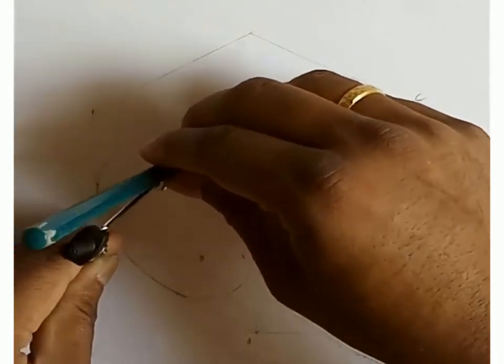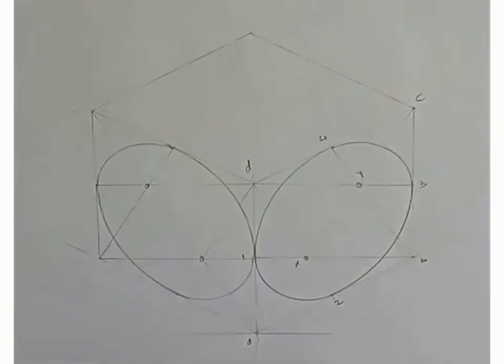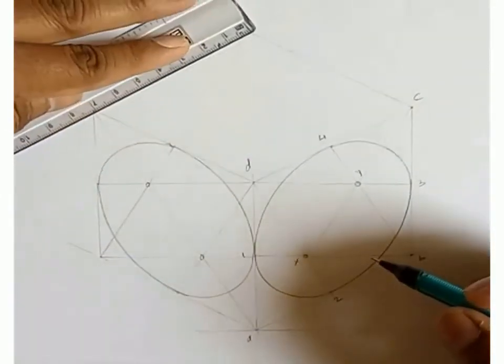It will give us a complete view of an isometric circle on left vertical surface. Then we will draw isometric circle on top horizontal surface using the same procedure.